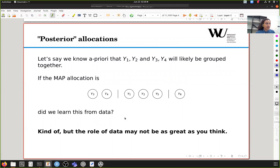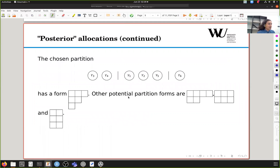Now let's say that we know a priori that observations y1, y2, y3, and y4 should likely belong to the same cluster. And let's say the MAP maximum a posteriori allocation looks like this. We learn this from data. It's a posterior, so we learn something from data, but the role of data may not be that much in some cases. This chosen partition has a Young diagram representation as follows. Other potential partitions are this and this, because y1, y2, y3, and y4 have to be in the same partitions, so you get these squares.